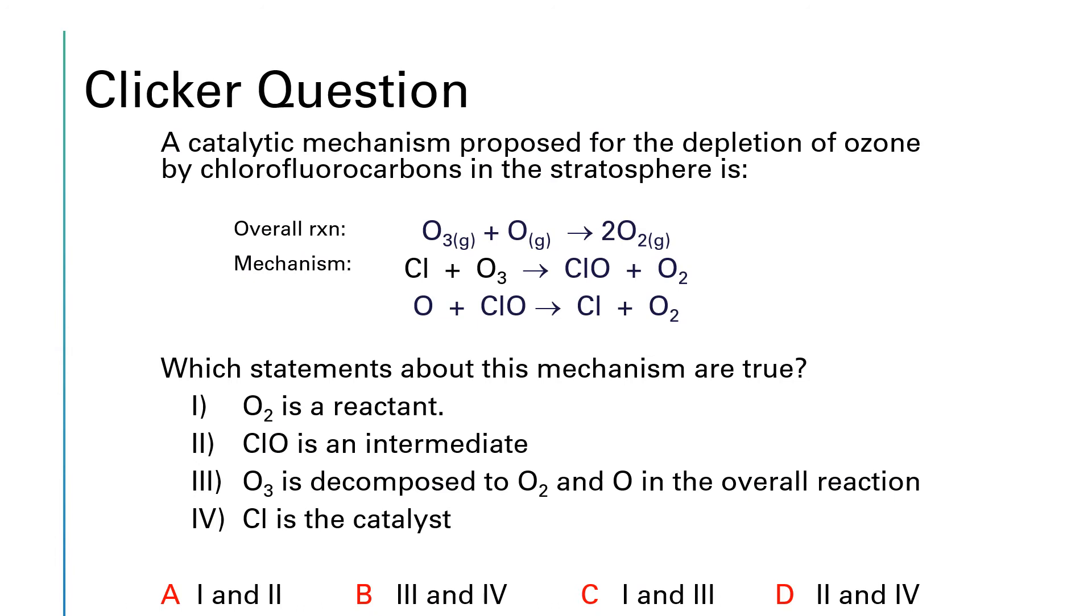Let's analyze this mechanism. A catalytic mechanism is proposed for the depletion of ozone by chlorofluorocarbons. The overall reaction is given first. It says that ozone plus atomic oxygen yields two oxygen molecules. The first step of the mechanism is that a chlorine atom attacks ozone to make ClO plus oxygen. And then in the second step, an oxygen atom attacks ClO to give us chlorine plus oxygen. So we're asked to analyze which of these statements are true.